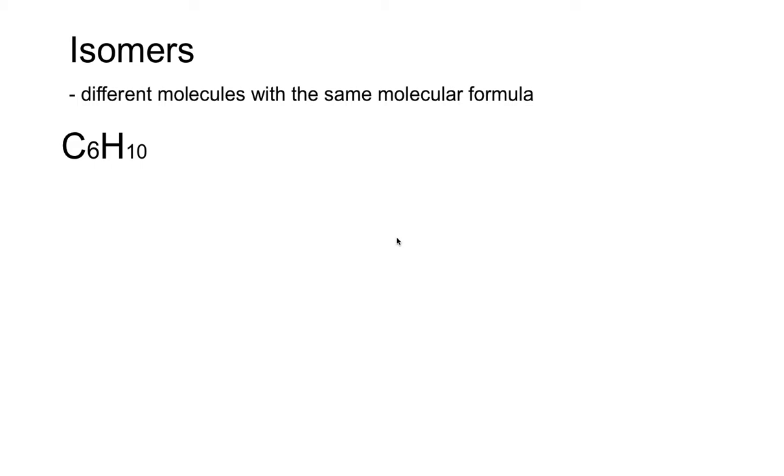In this video, I'm going to look at drawing isomers from a molecular formula. Isomers are different molecules that have the same formula. We know they're a different molecule because they would have a unique name. Two molecules that look different but would be named the same way are the same molecule. They're just a rotation or flip of the same thing.